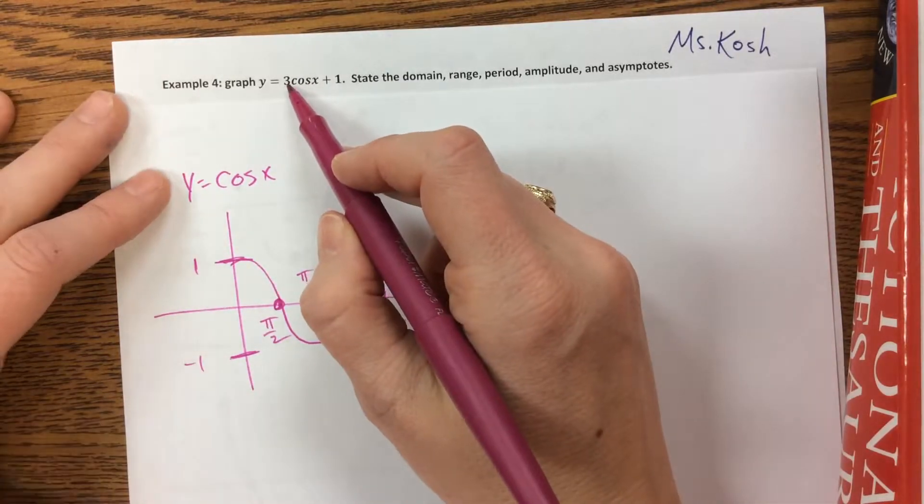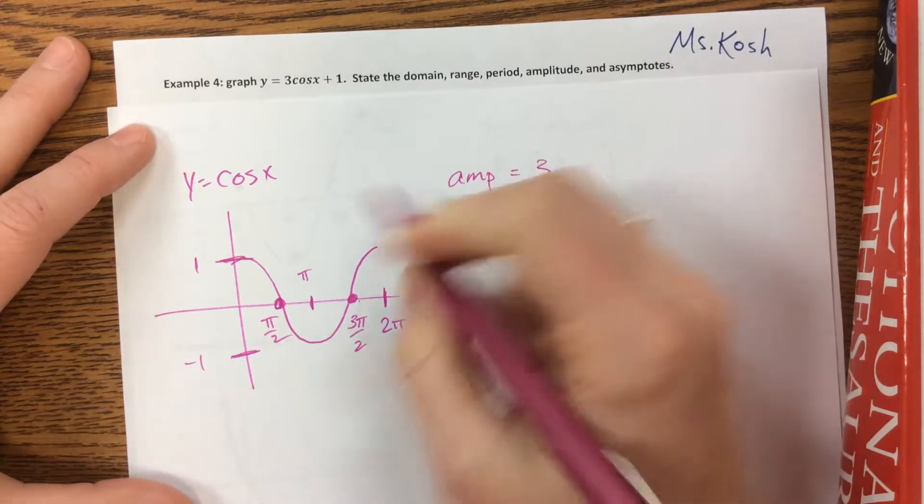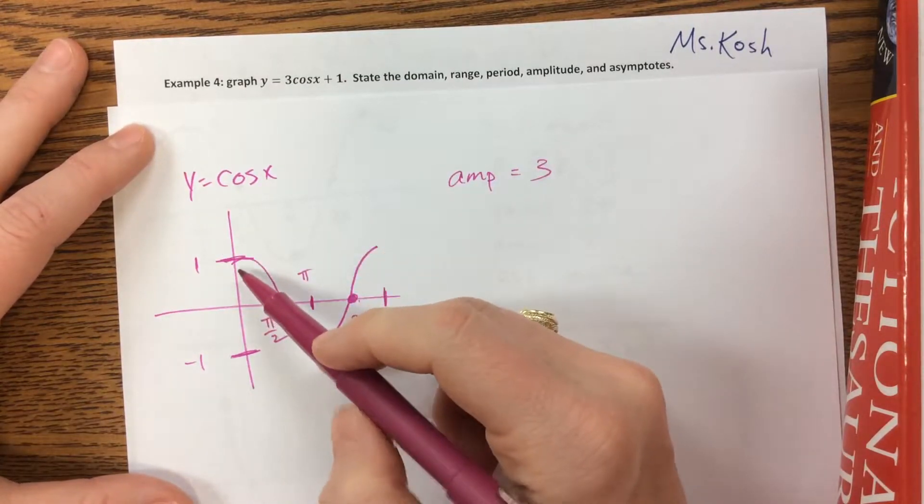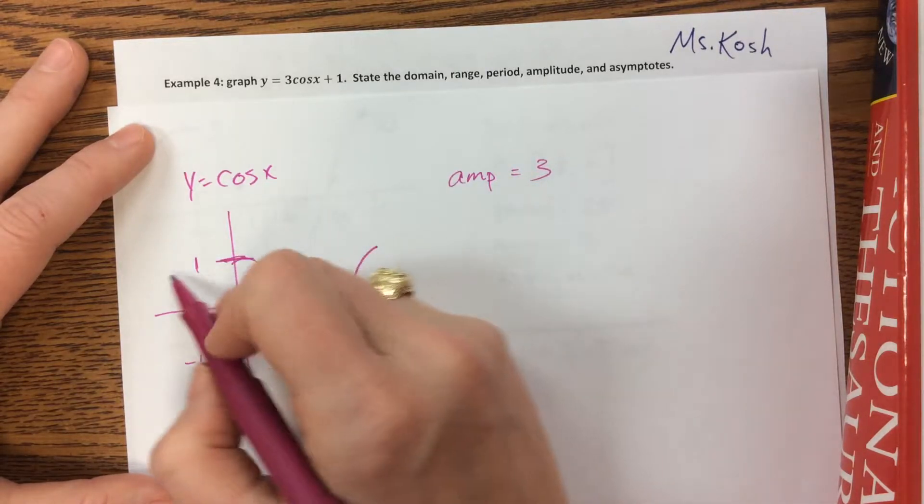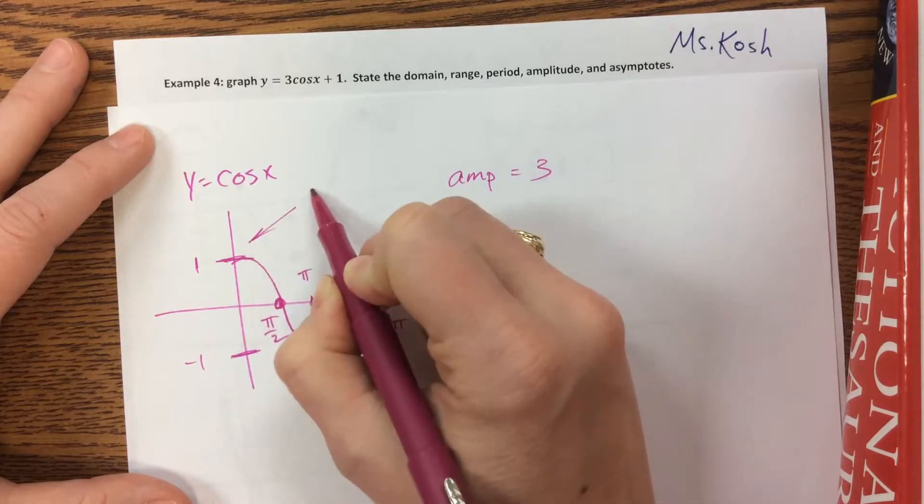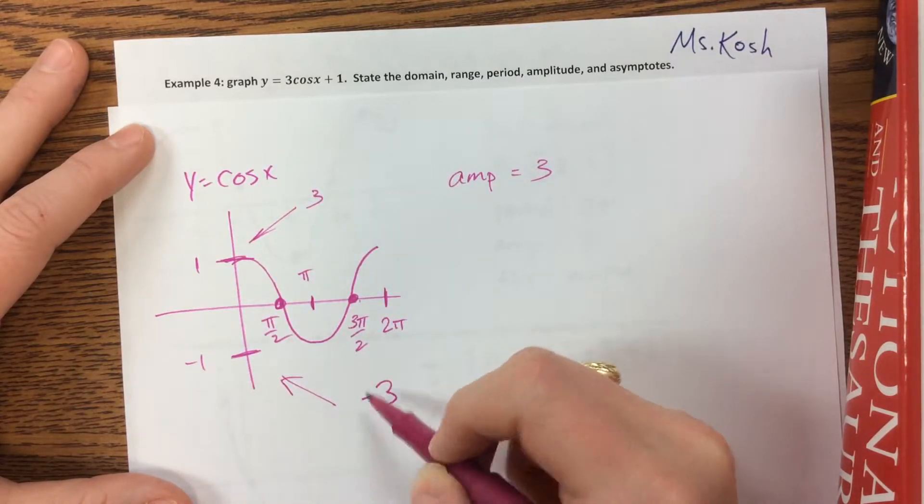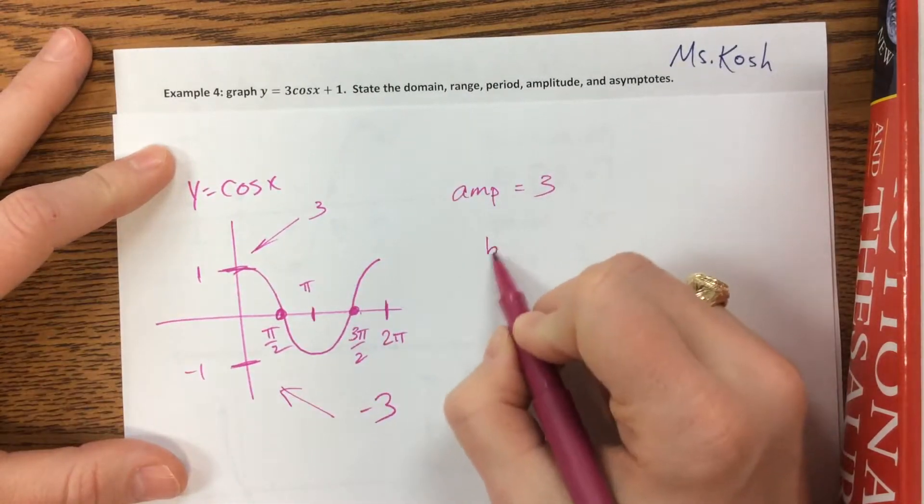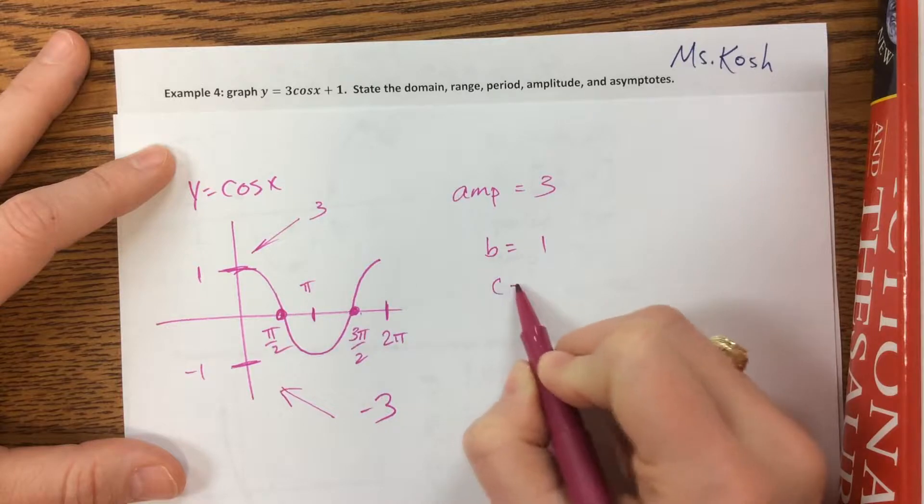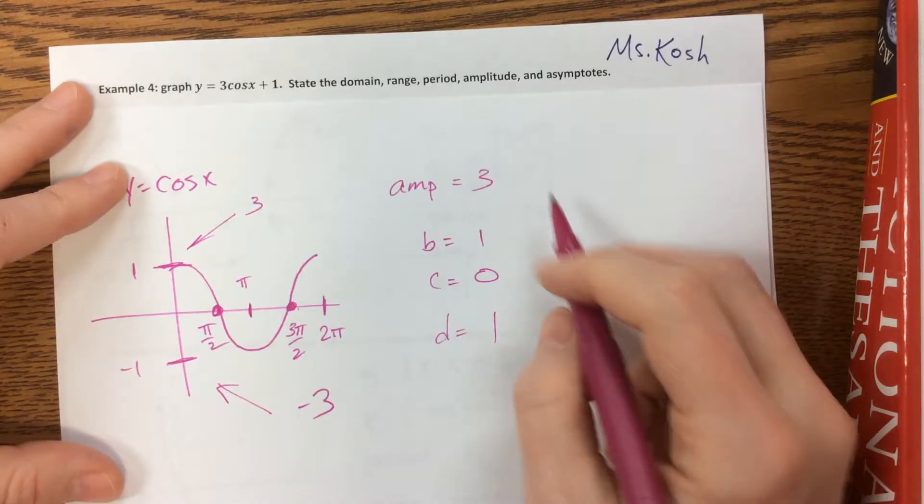Now you'll notice the 3 impacts the amplitude, so your amplitude is now going to be equal to 3. So instead of going up as high as positive 1 and as low as negative 1, I'm now going to change these. It's now going to go up to 3. This needs to become 3, and that needs to become negative 3. Then the other thing that happens, notice that my b value is still just 1, my c value is still 0, but I have a d value of positive 1. So this tells me that I'm going to shift up 1 unit.